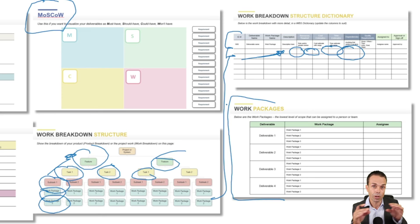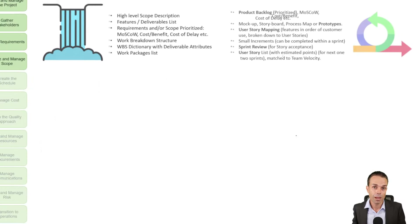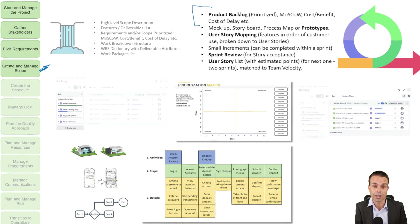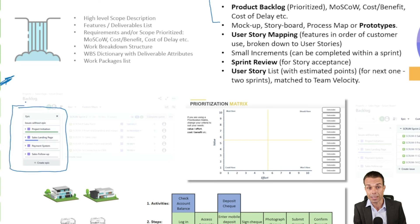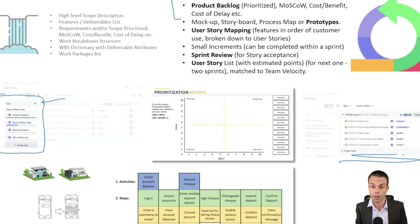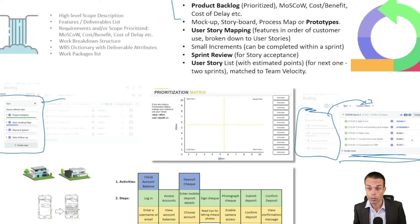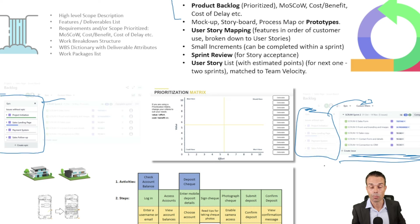From an Agile perspective, when we're managing and creating scope we start with our product backlog. A product backlog could be a list of epics — high-level features or ideas — that we then break down into user stories. Epics break down into maybe 10, 20, or 30 user stories, and those are the user stories we complete during a sprint. This is similar to our Work Breakdown Structure where we're breaking deliverables down into work packages that someone can work on — very similar stuff.